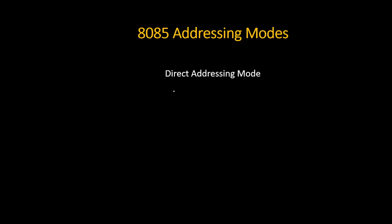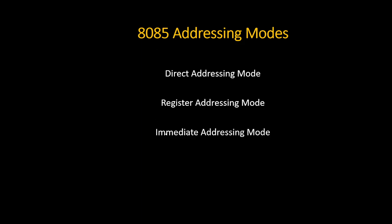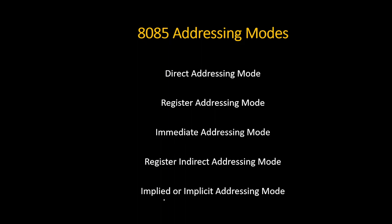Hello friends, today we are going to learn various addressing modes of the 8085 microprocessor. There are various types: direct addressing mode, register addressing mode, immediate addressing mode, register indirect addressing mode, and the final one is implied or implicit addressing mode. Let's try to understand them one by one.